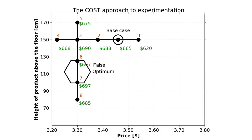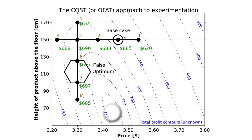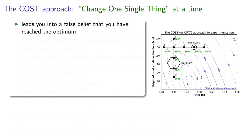This is still a lot better than our starting point of $665. But let me show you the true surface — this is called a contour plot. Now we never really know what this surface looks like in practice, but this example quickly demonstrates the problem with the COST, or OFAT, approach. We have not actually achieved the optimum. The company has the false belief that they have. When variables are considered independently, you think you've reached the optimum, but jointly there's still room for improvement. The OFAT approach does work in some limited cases, but the chances are quite small.